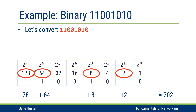Converting a number from binary to decimal is really very simple when we use a chart like this. We're going to use this same chart to convert a decimal value to a binary value. It's a little more complicated because we have to do some comparison with each column one at a time.